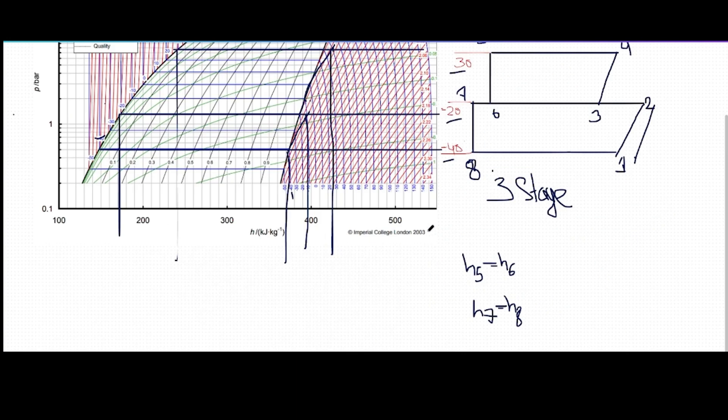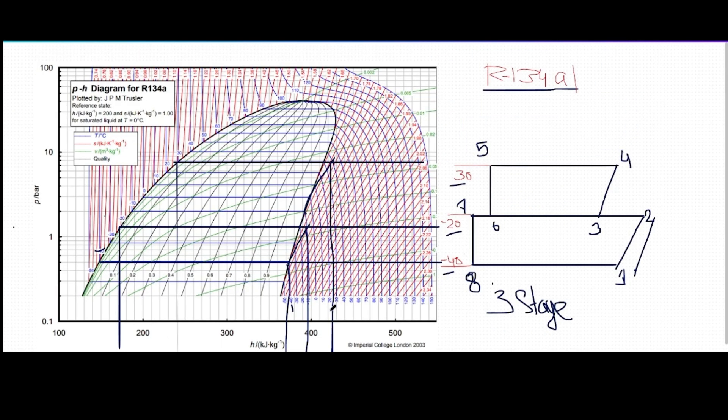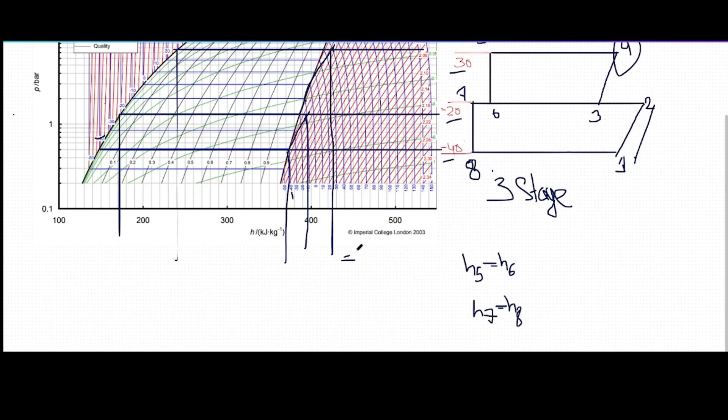First, our first line is 30 degrees Celsius. Where is the 30 degrees Celsius? We will find easily that it is h4, so it is the line of h4 straight. That is 400 to 500, so we can write easily 440 kilojoule per kg. Then the next one is h2, and h2 is 380 degrees Celsius.